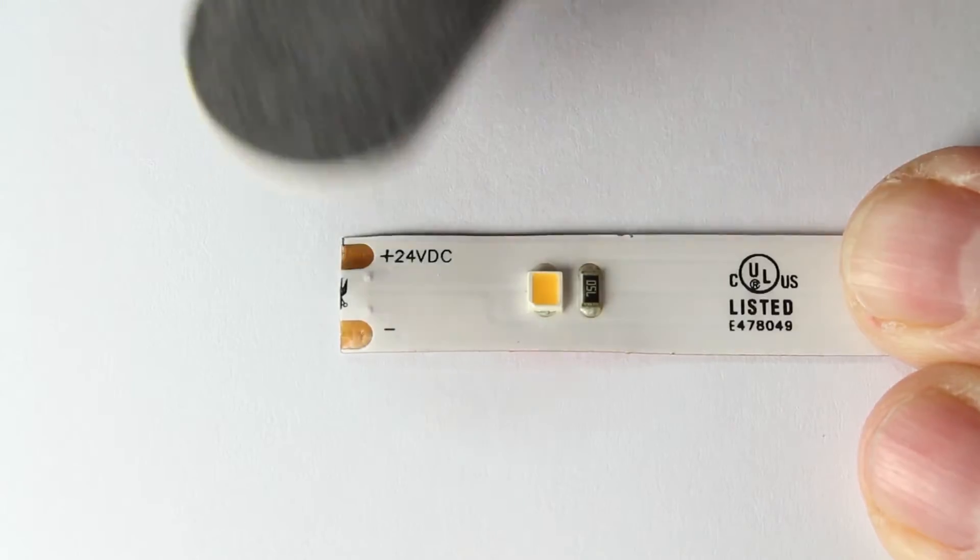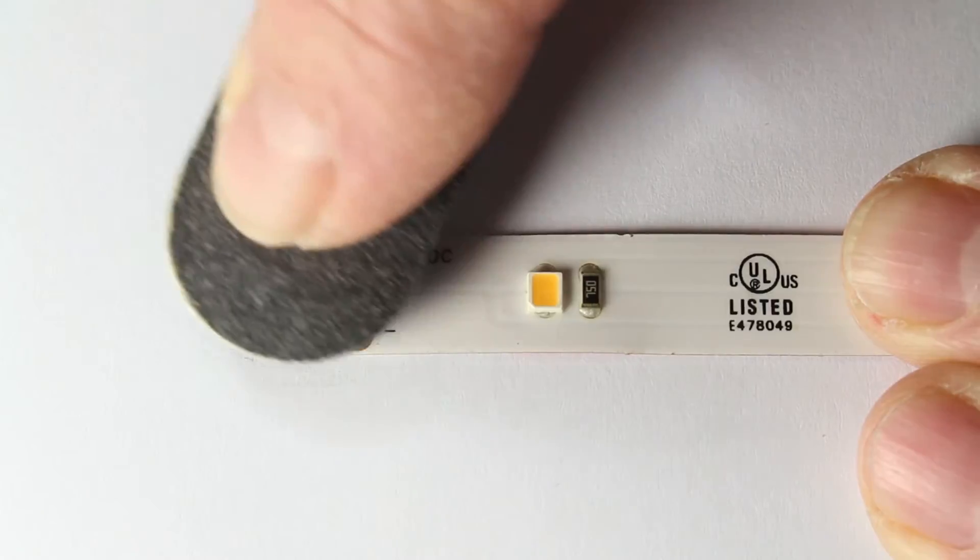The thin coating can be removed by lightly sanding the area with an emery board.